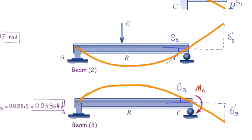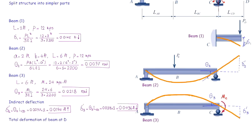Following the direction of that moment, it causes the simply supported beam to bend upward and the cantilever beam on the right side to bend downward. We need to take care of the direction of deflections. The last step is adding the deformations together. Delta D, the overall deflection at point D, equals delta one plus delta prime two plus delta prime three. The primes indicate indirect deflections, while delta one is the direct deflection.